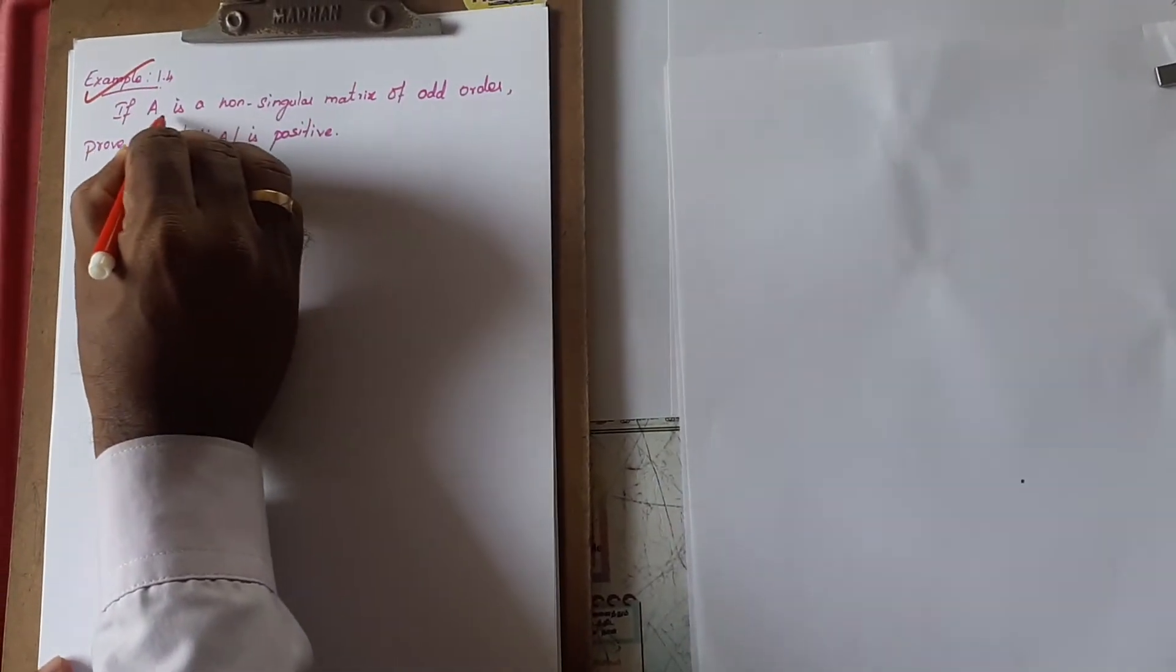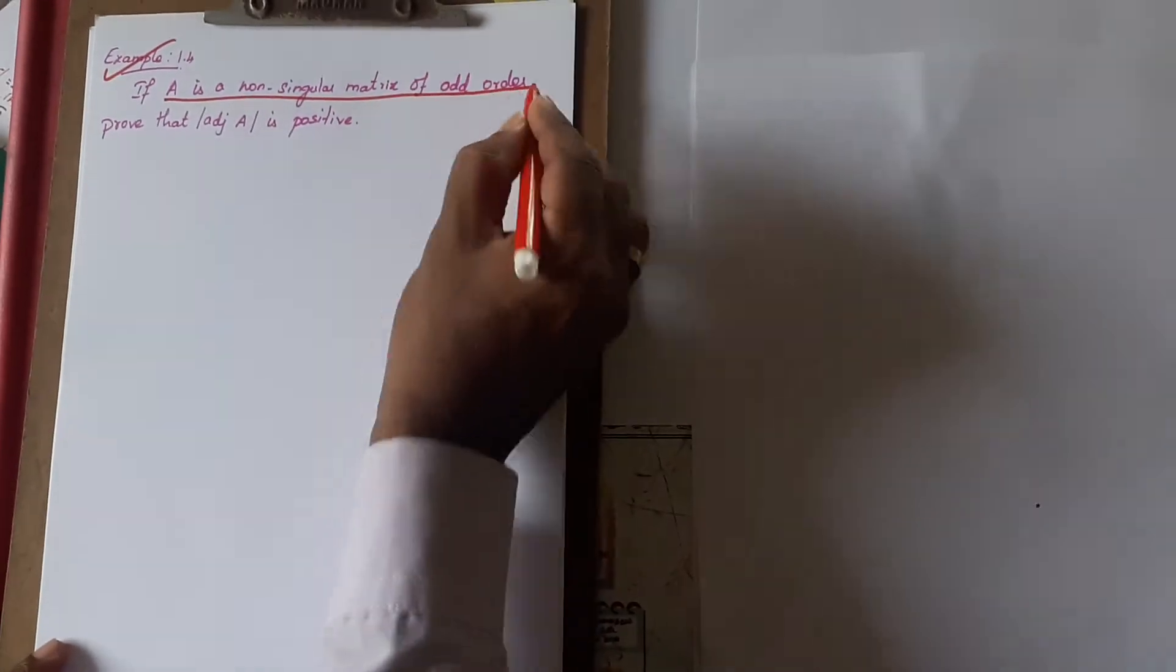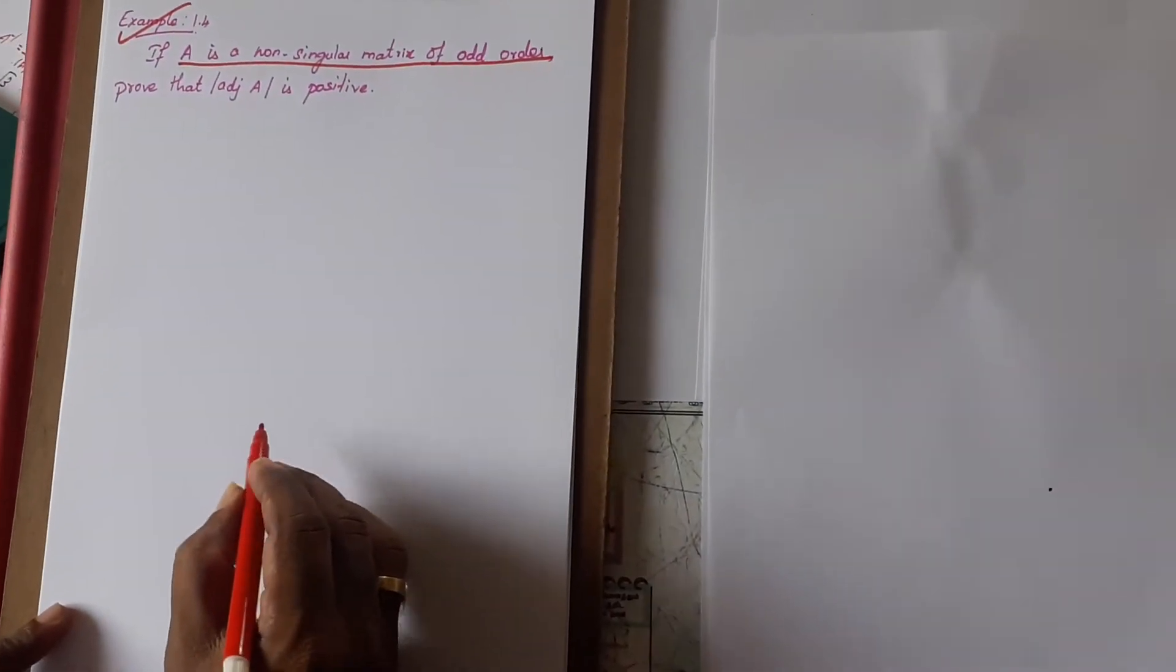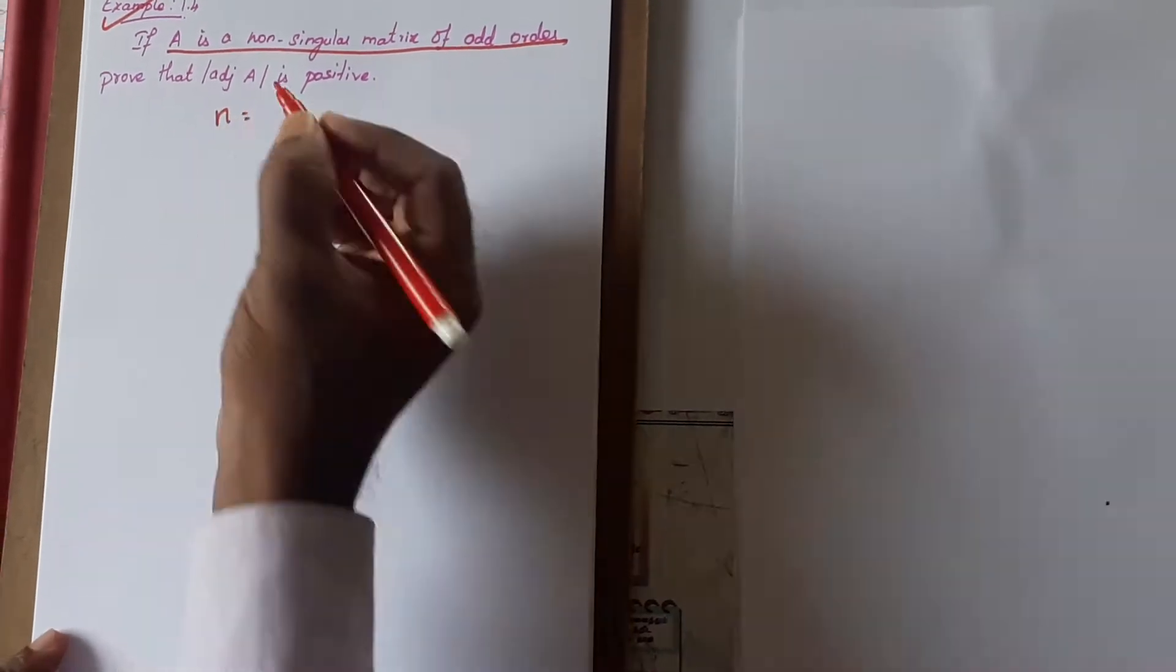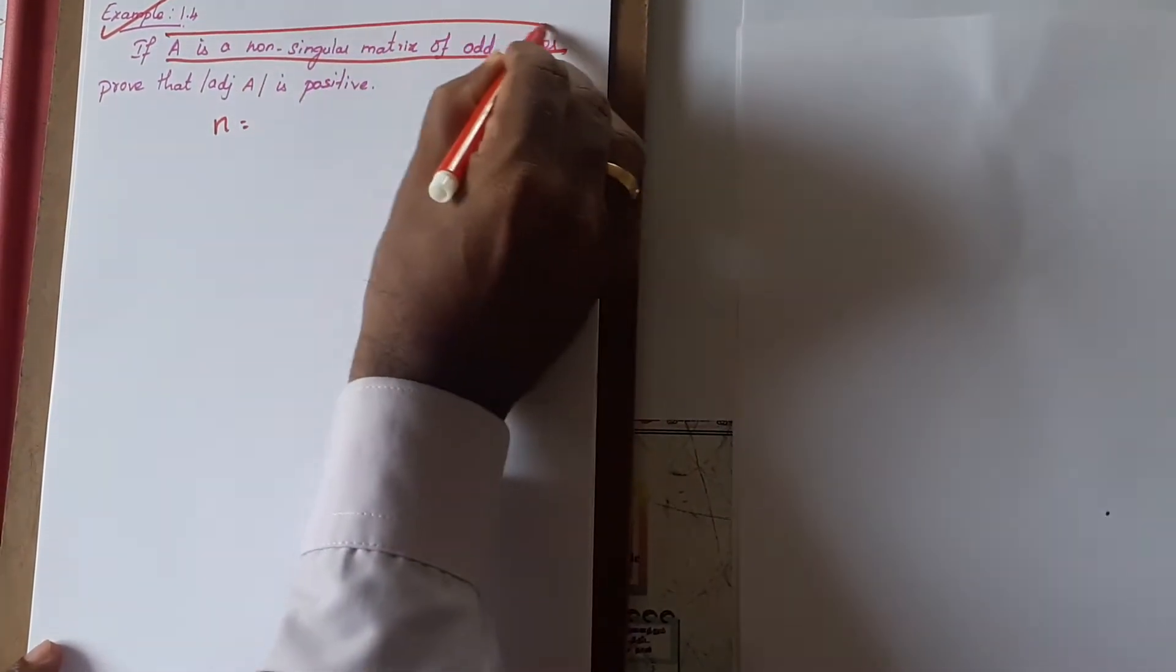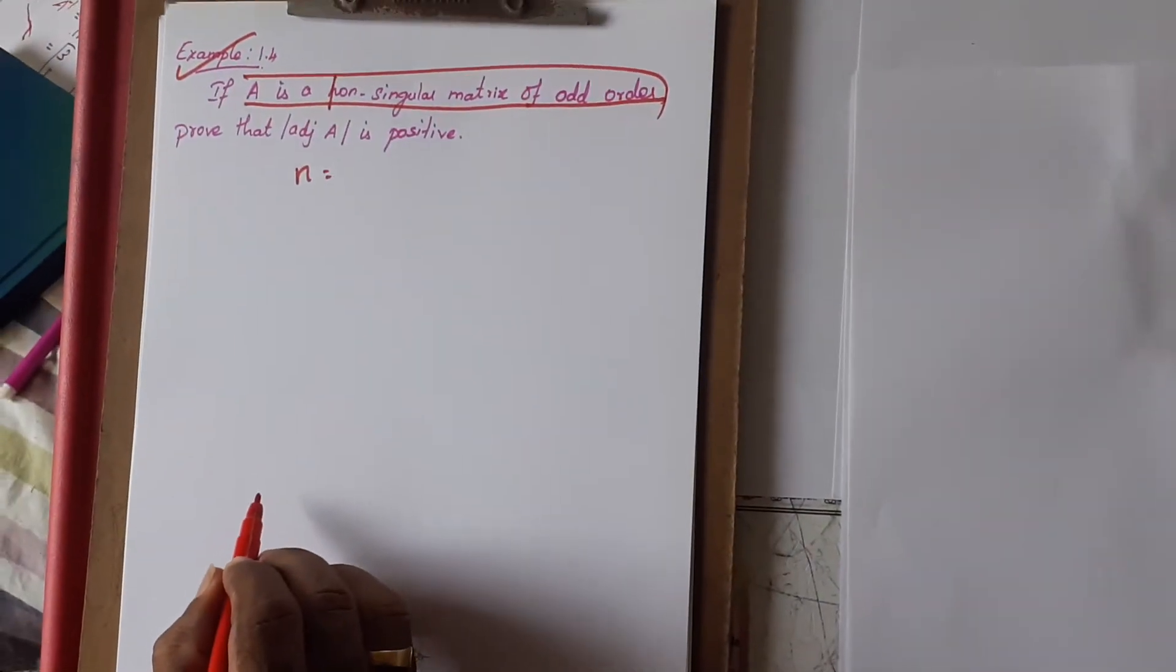The given condition: if A is a non-singular matrix of odd order. So if you take N, definitely a non-singular matrix of odd order.